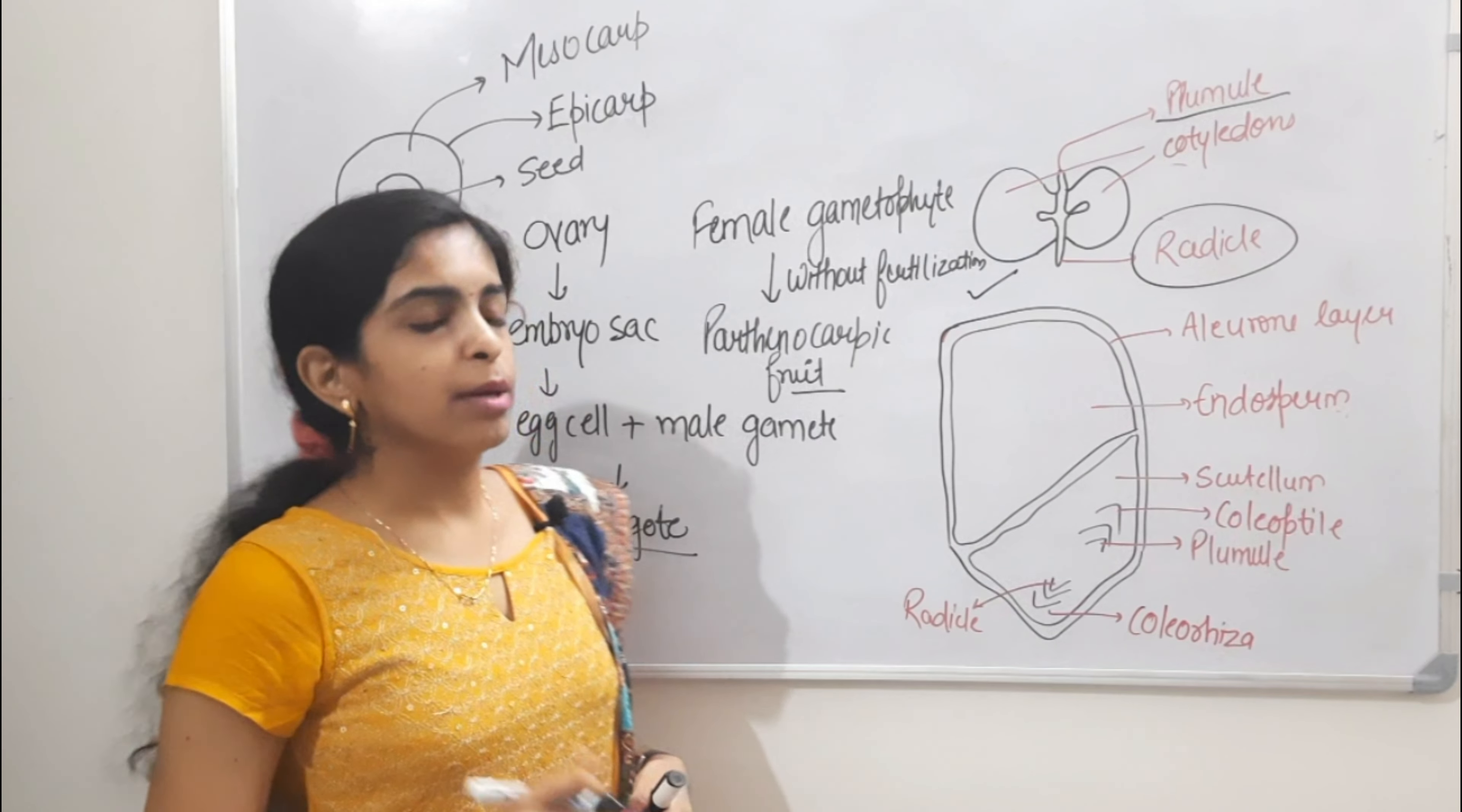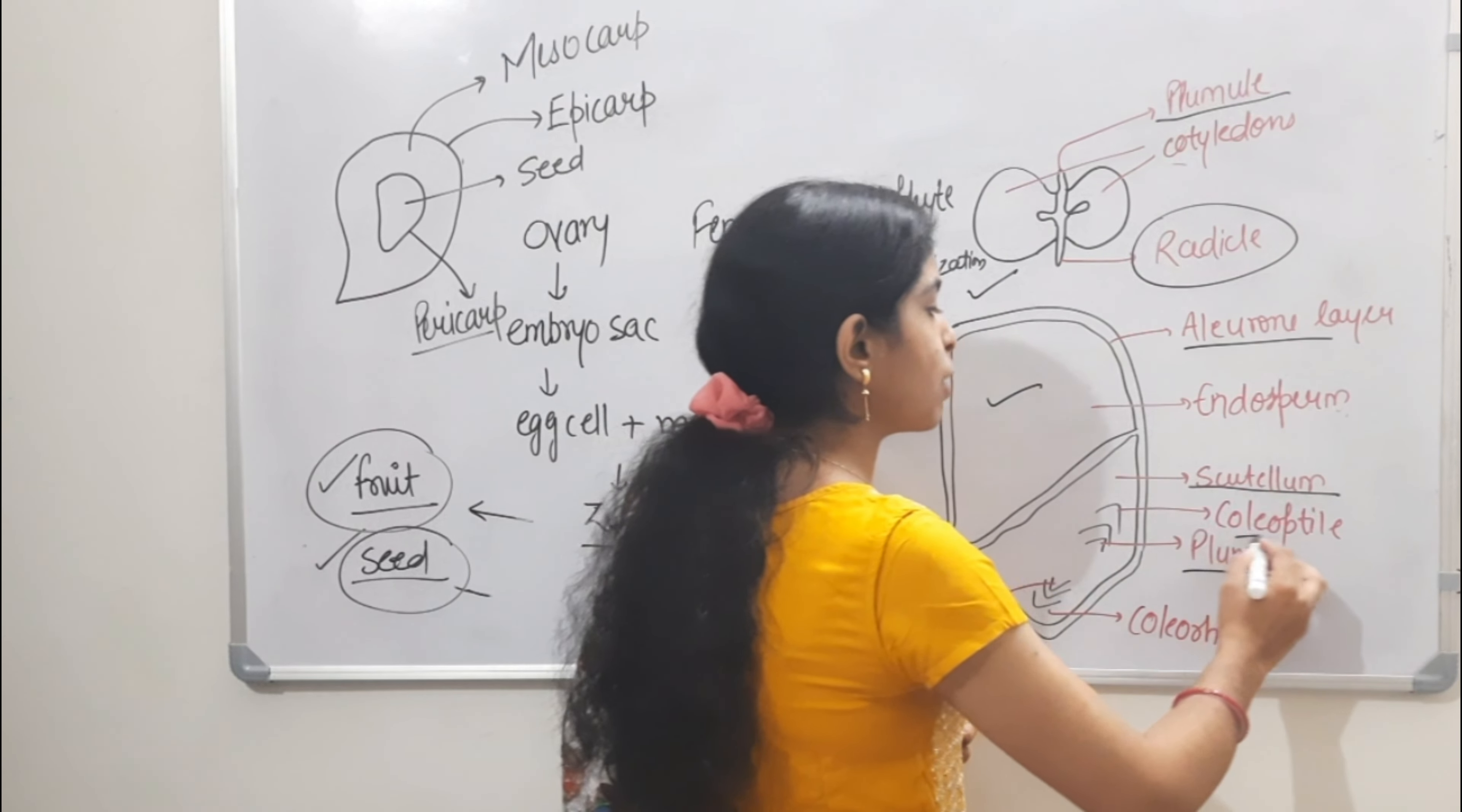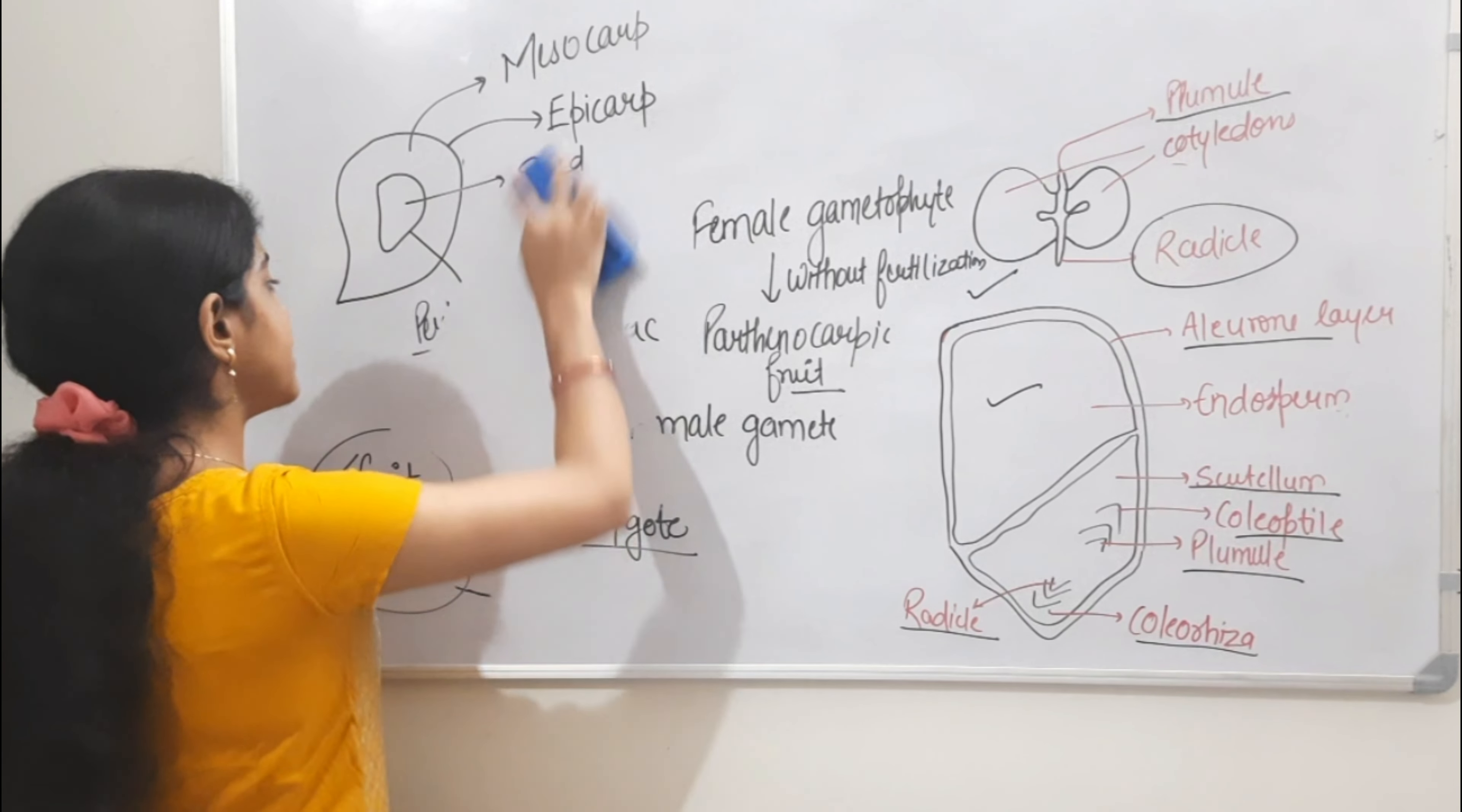What is monocot? Single cotyledon which is called scutellum. There is persistent endosperm and the aleurone layer. Here is the plumule covered by coleoptile, and the radicle covered by coleorhiza. The monocot seed structure is like this and the dicot seed structure is like that. Next is the floral diagram.